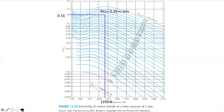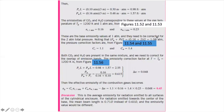Now for Figure 11-53: the emissivity of carbon dioxide at a total pressure of one atmosphere. Again, the chamber temperature is 1,200 Kelvin. The product of partial pressure of CO2 times mean beam length is 0.30 meter·atmosphere, and the 0.30 line is available directly on the chart. Reading across to the left gives an emissivity of approximately 0.15 to 0.16. A variation of ±0.01 is acceptable. These are the base emissivity values at one atmosphere for CO2 and water.